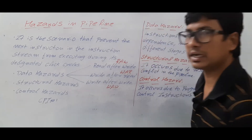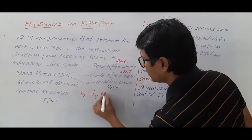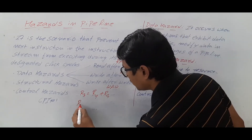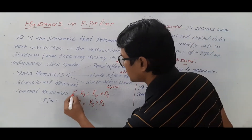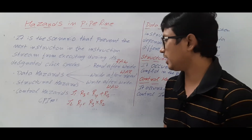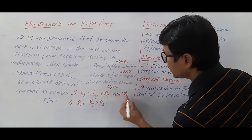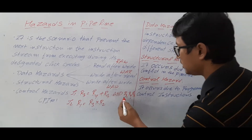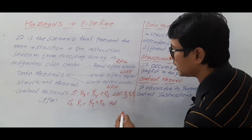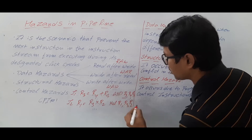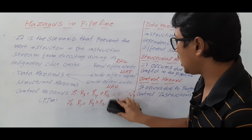Let me explain data hazards with an example. Suppose I have two instructions: instruction 1 is ADD R3, R4, R5 — meaning R3 = R4 + R5, where R3 is the destination and R4, R5 are source registers. Instruction 2 is MUL R1, R3, R2 — meaning R1 = R3 × R2, where R1 is the destination and R3, R2 are source registers.